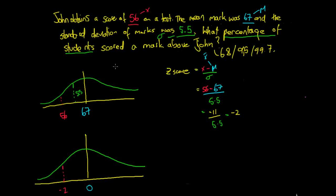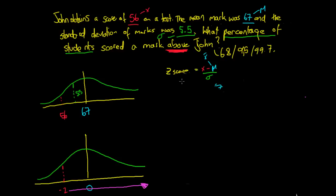We need to work out what percentage of students scored a mark above John. We'll use our 68, 95, 99.7 rule. The 68% rule applies to plus or minus one standard deviation. The 95% rule says 95% of data is within plus or minus two standard deviations. And 99.7% of data is within plus or minus three standard deviations.